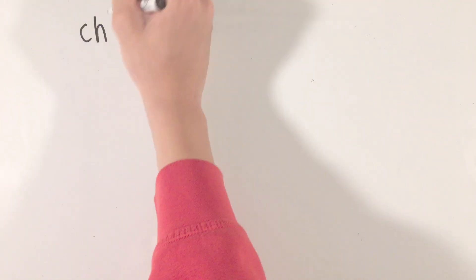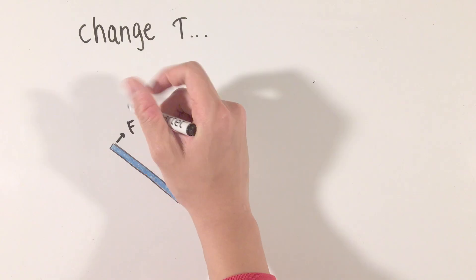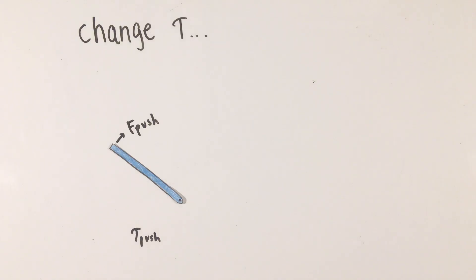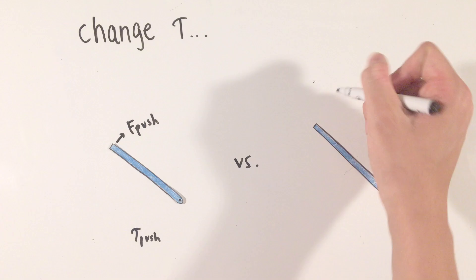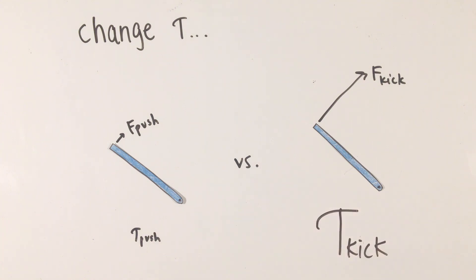In addition, because torque is a product of two quantities, force and lever arm, you can change the magnitude of the torque in two different ways. The first way is to increase the force applied. For example, if I were to lightly push on a door versus kicking it open, the door would rotate about the hinge faster when I kick it.